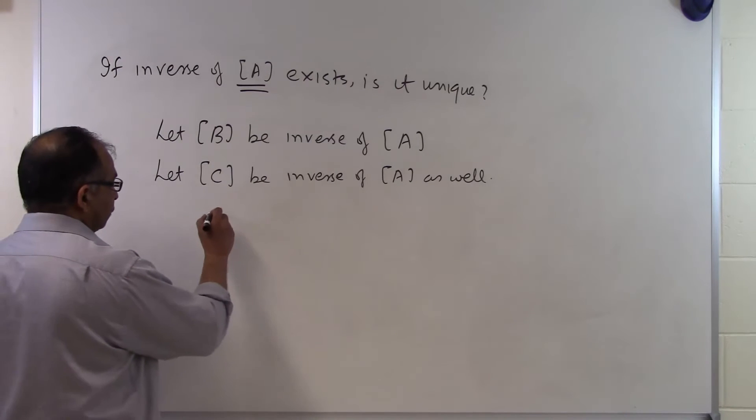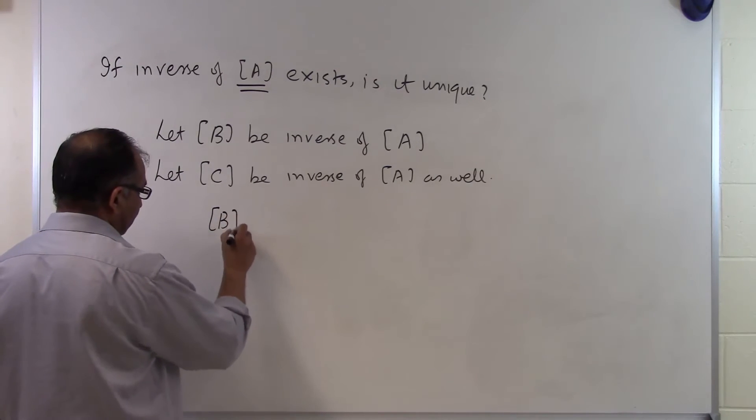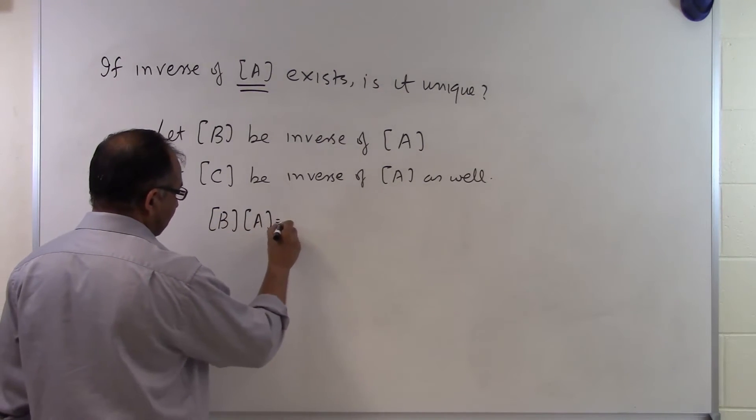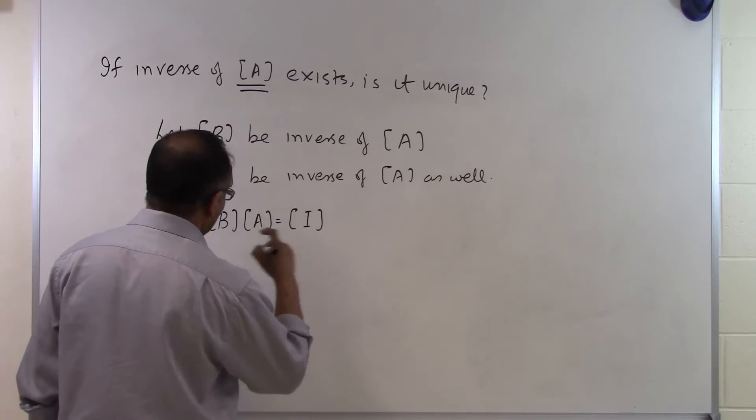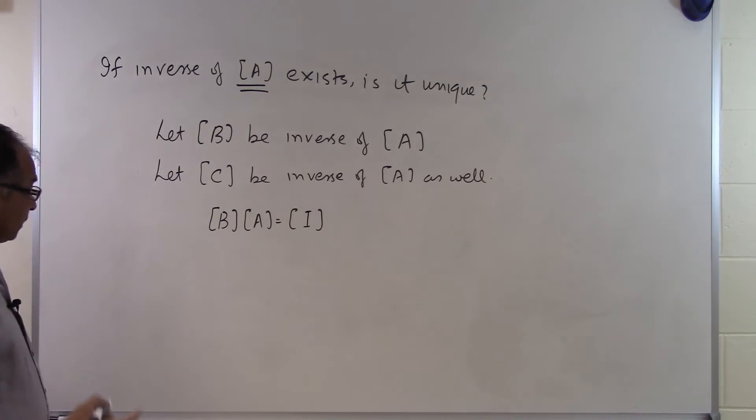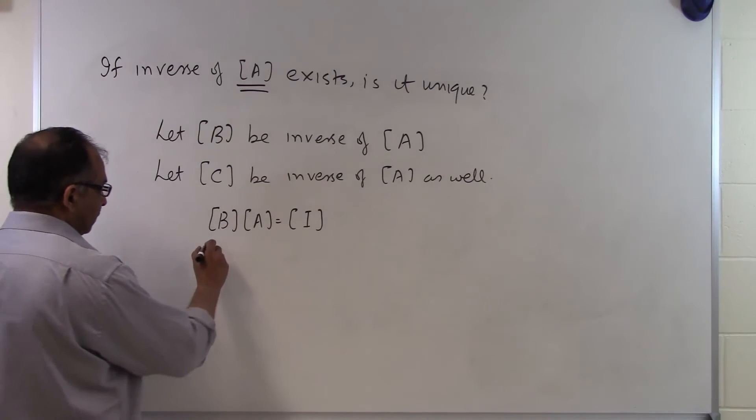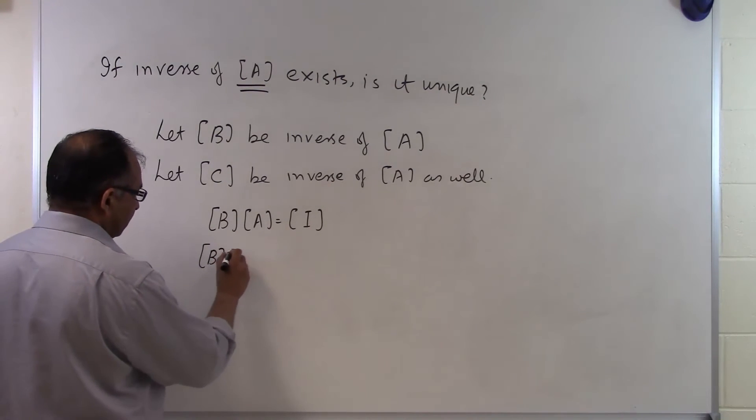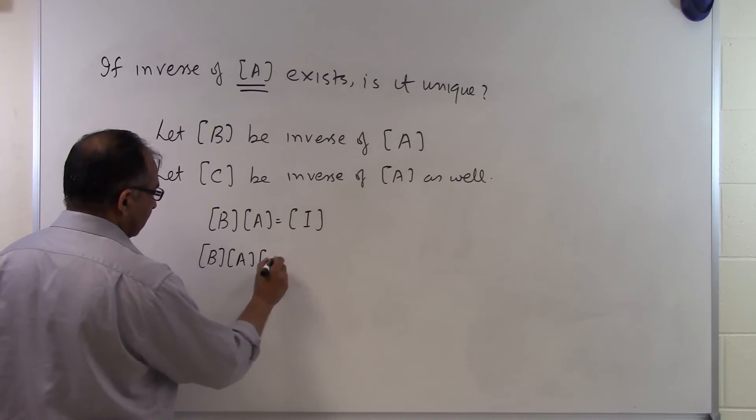Now let's go ahead and use this to prove it. We know that B times A is the identity matrix. And how do we know that? We know that because B is the inverse of A. That's from the definition itself. And what I am going to do is multiply both of these sides by C.